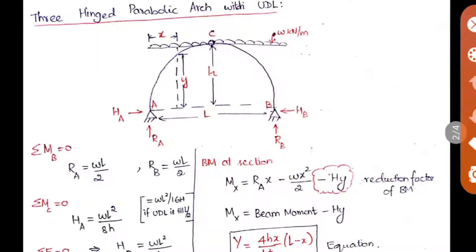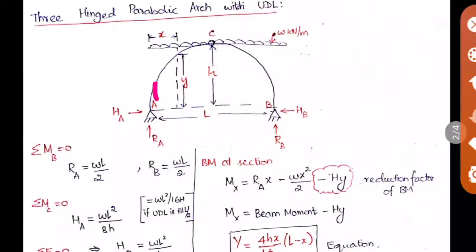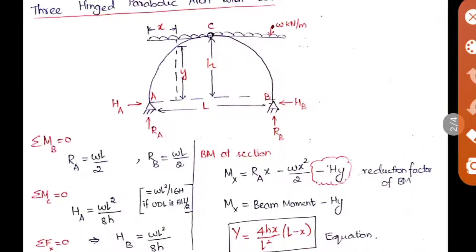Now we analyze the three-hinged parabolic arch with a UDL running throughout the span. The span is L and the arch is the curved beam. There are supports at both ends and an internal hinge at the crown. The reactions are HA, RA, HB, and RB. The rise H is the maximum height of the arch at the crown where the internal hinge is located.